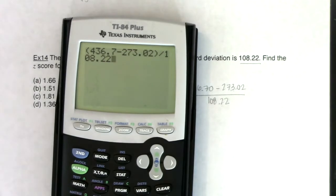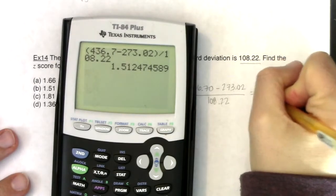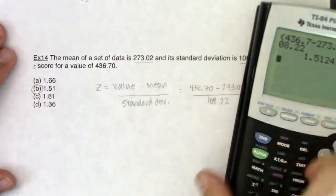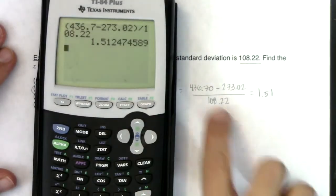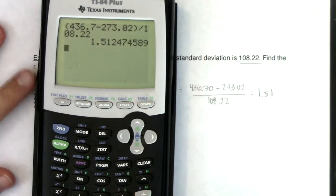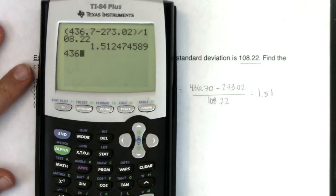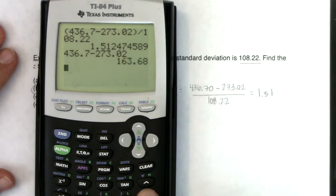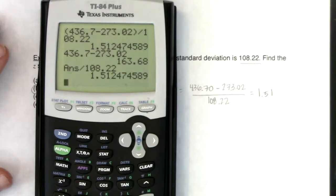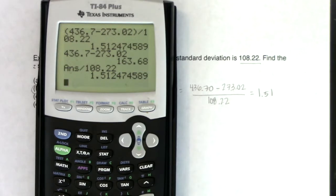So let me clear this, and we'll do all this again. So I put the parentheses around the numerator, hit enter, and there's my answer of 1.51. And now I can see that in option B. The other thing that you can do is you can just do the numerator first. So I could on my calculator just do 436.7, subtract out 273.02, and then I can divide that by 108.22. So you always have the option of just taking your calculator commands one piece at a time.